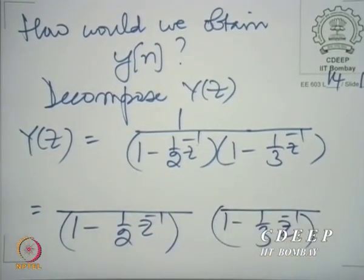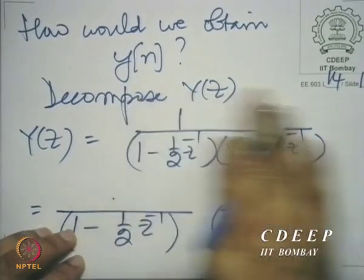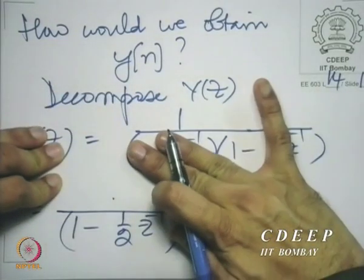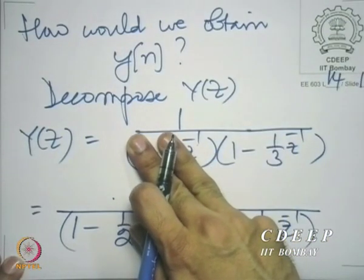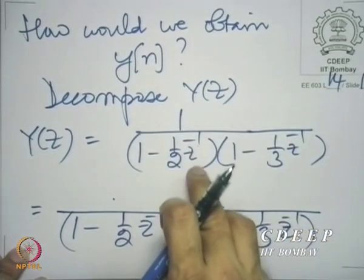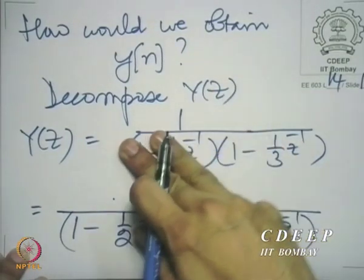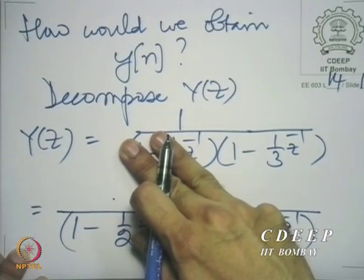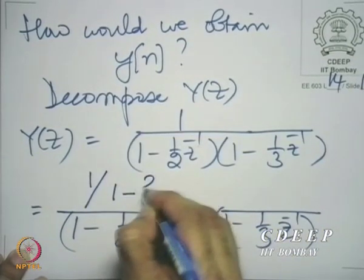The idea is very simple. When I want to find the first coefficient, I multiply Y(z) by (1 minus half z-inverse) and put z equal to half. So essentially, I am multiplying by (1 minus half z-inverse) and making this factor zero. Multiply by (1 minus half z-inverse), put z equal to half. So I get 1 minus one-third into half-inverse, that is 2. So I have 1 by (1 minus 2 by 3).